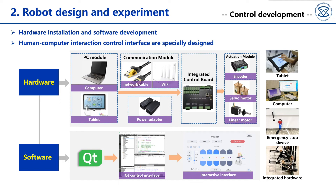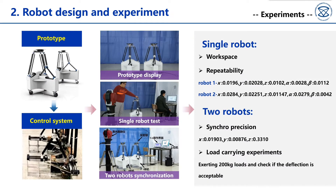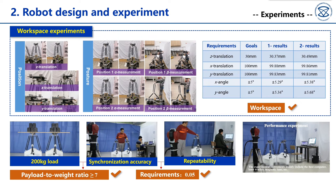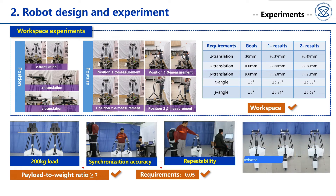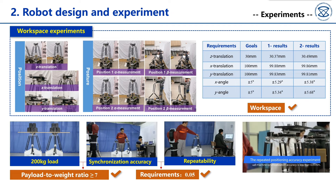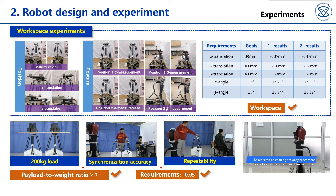For the control development, it mainly includes hardware and software integration. A graphical user interface is specially designed. Workspace and repeatability of single robot are tested. Synchronous precision and load-carrying capacity of two robots are verified. The robot can travel 100 mm in X and Y directions and can move 30 mm along Z-axis. It can rotate within 10 degrees about X and Y-axis. The required workspace is reached.